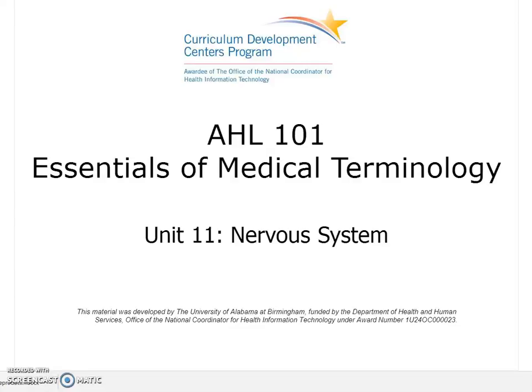In this unit, we will review the nervous system. Doctors who treat disorders of the nervous system are called neurologists, and if the patient's problem requires surgery, he or she would be referred to a neurosurgeon.